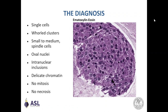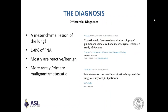This morphological image oriented us toward a primary or metastatic mesenchymal lesion of the lung. These lesions are quite rare, composing only one to eight percent of fine needle aspirates. Most are reactive or benign. More rarely there might be primary malignant or secondary metastatic lesions to the lung that have some spindle cell features.